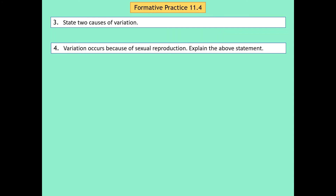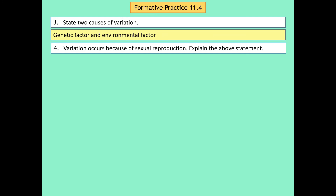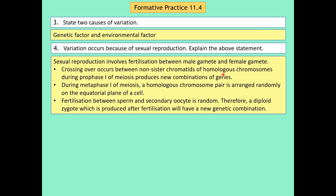Question three: state two causes of variations. The answer is genetic factor and environmental factor. Question four: variation occurs because of sexual reproduction — explain this statement. The answer is sexual reproduction involves fertilization between male gamete and female gamete. Crossing over occurs between non-sister chromatids of homologous chromosomes during prophase 1 of meiosis, producing new combinations of genes. During metaphase 1 of meiosis, a homologous chromosome pair is arranged randomly on the equatorial plane. Fertilization between sperm and secondary oocyte is random. Therefore, a diploid zygote produced after fertilization will have a new genetic combination.